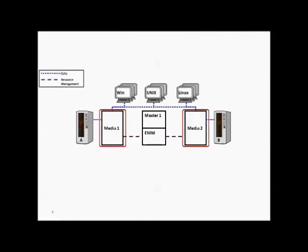In this picture, the media server is not part of the master server — it is a separate, dedicated media server attached to a tape library. The EMM is part of the master server. All these clients — thousands of machines from your data center — are backing up through this architecture.